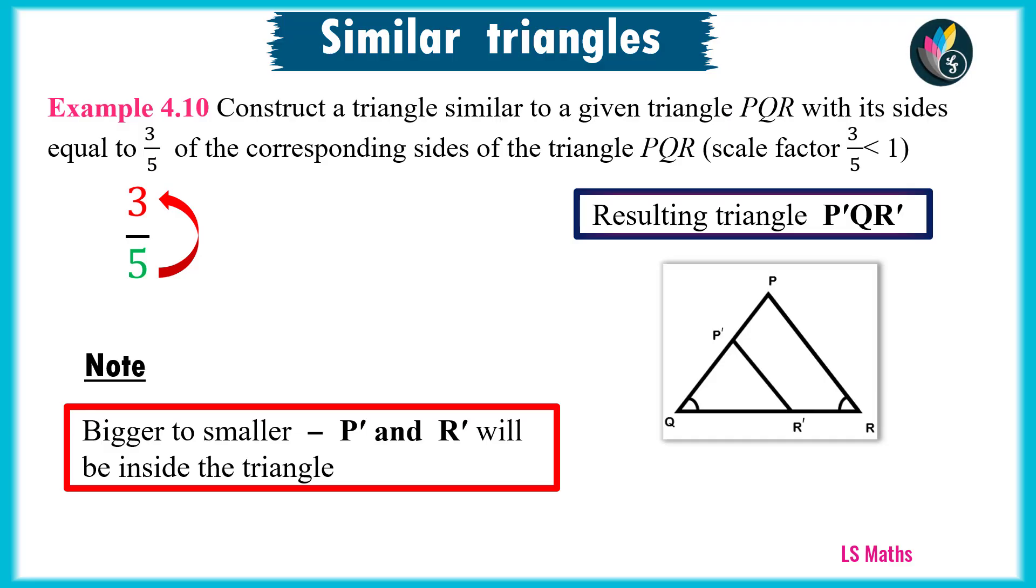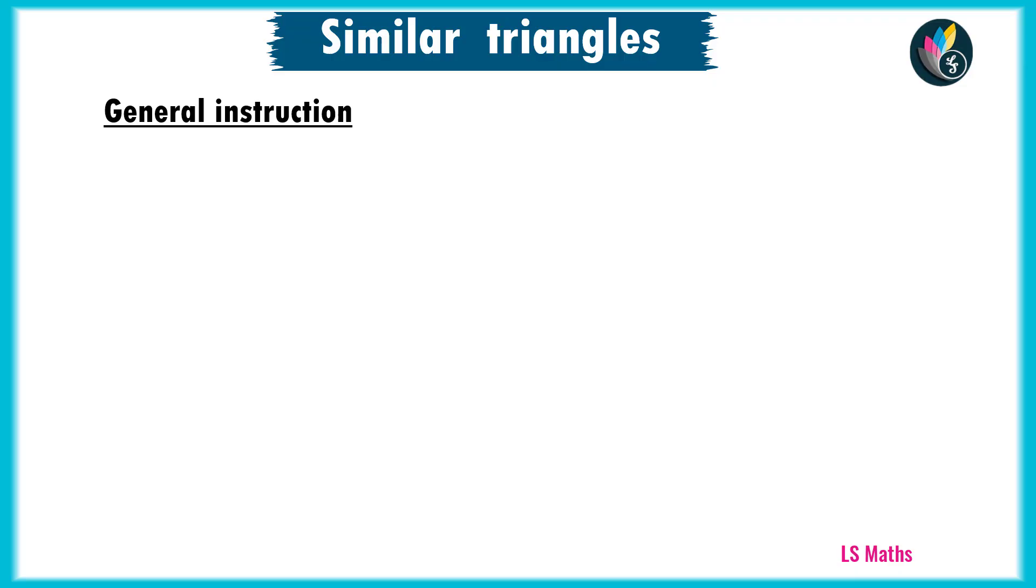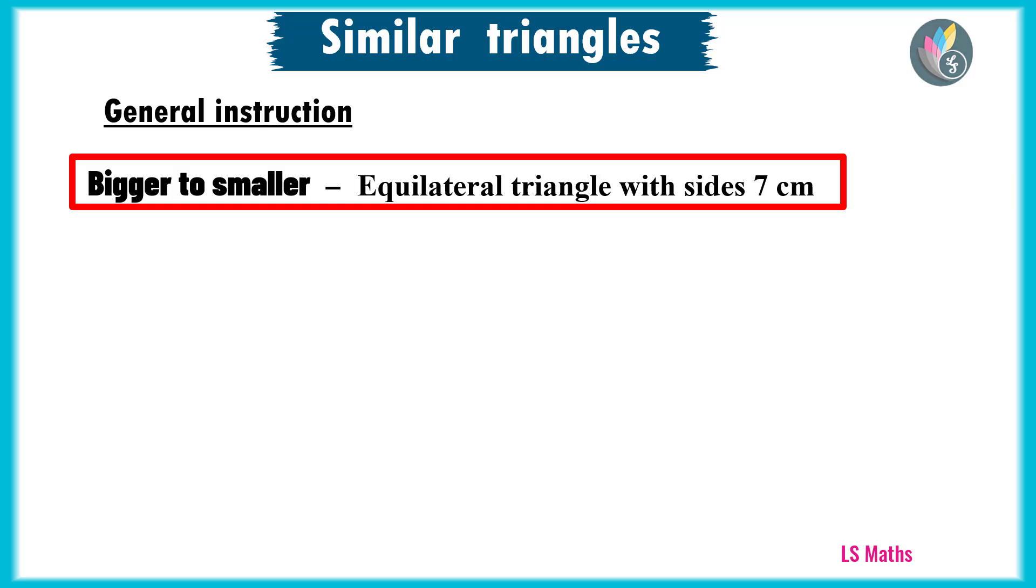Next, one important general instruction. Whenever we draw a bigger to smaller triangle, we take an equilateral triangle with sides 7 cm. Actually, we can take any triangle with any measurements, but if we take an equilateral triangle, the diagram will look nice.